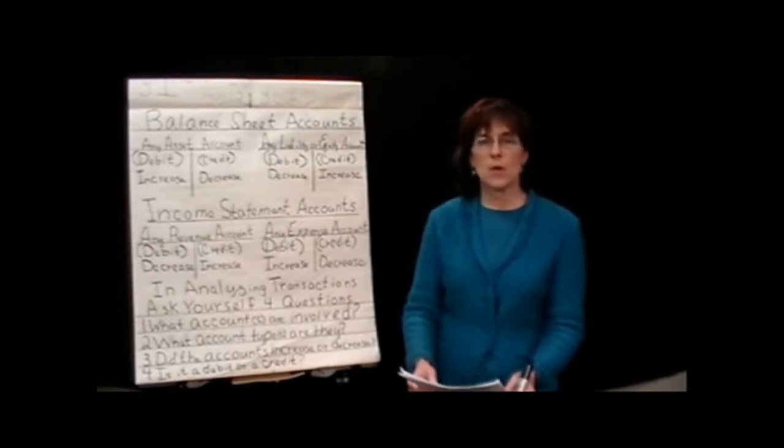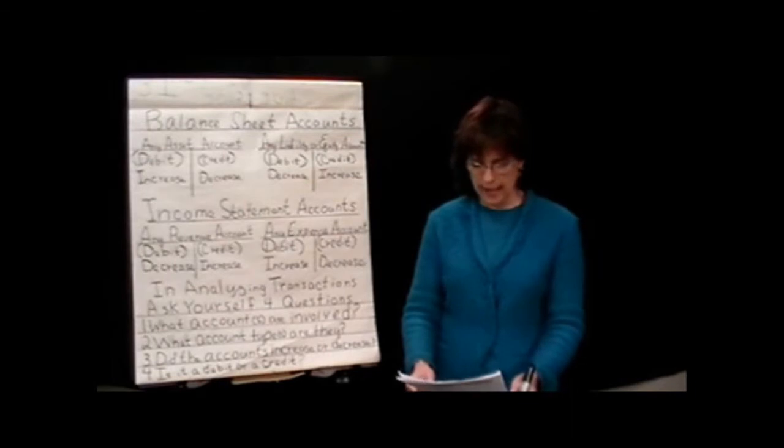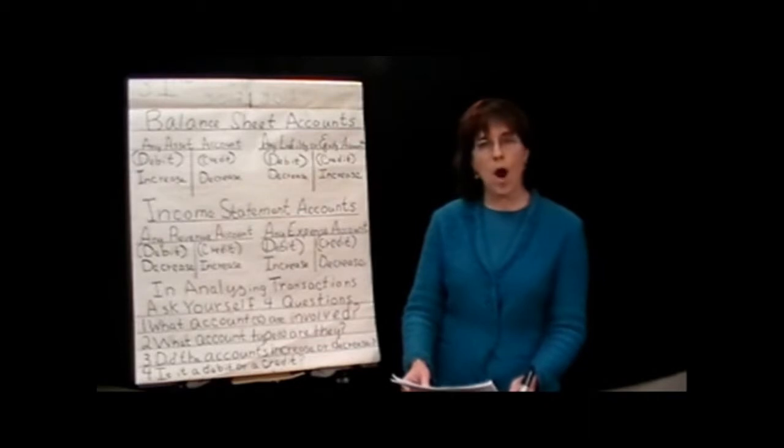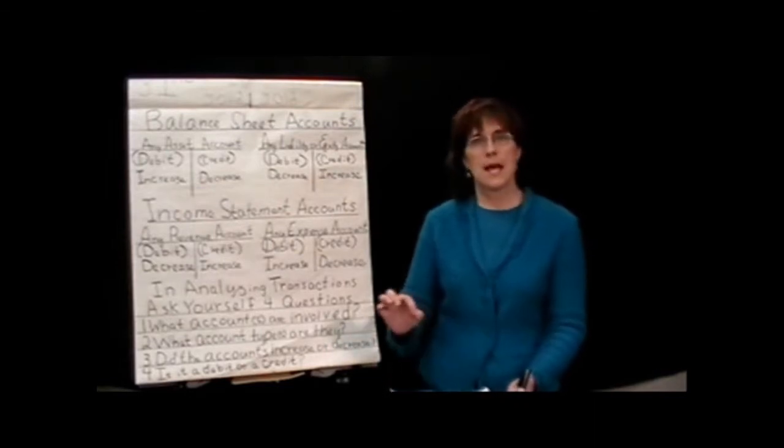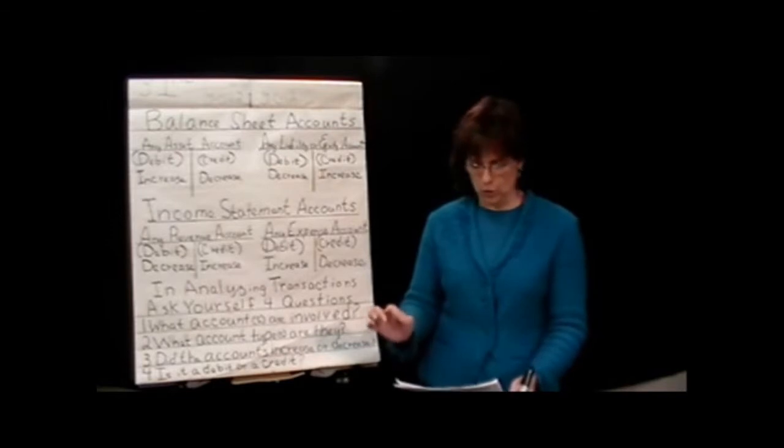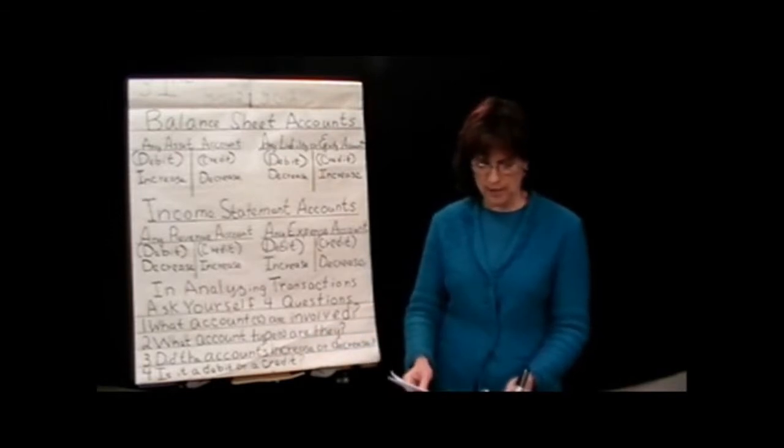All businesses use what's called the double entry accounting system. And it's based on the accounting equation. And it requires, first of all, that every business transaction be recorded in at least two accounts. And that the total debits recorded for the transaction equal the total credits recorded for each transaction.